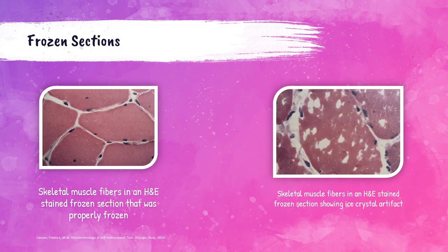A photo shows skeletal muscle fibers in cross-section — an H&E-stained frozen section properly frozen in isopentane and liquid nitrogen at negative 150 degrees Celsius. Another photo shows a frozen section of skeletal muscle fibers with ice crystal artifacts — the holes visible in the tissue — caused by improper freezing. That concludes the lecture on processing in the histology laboratory. If this video helped you, please give it a like and subscribe to the channel; any questions can be left in the comments.